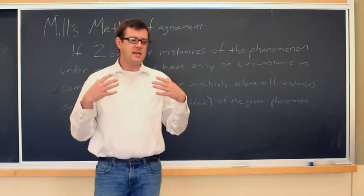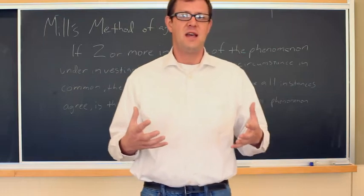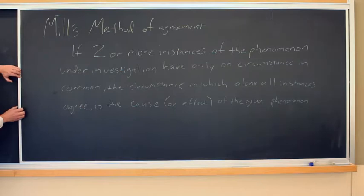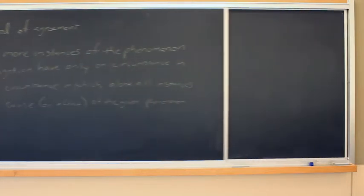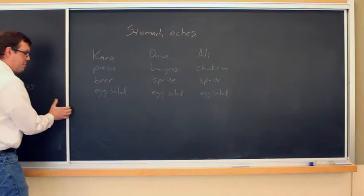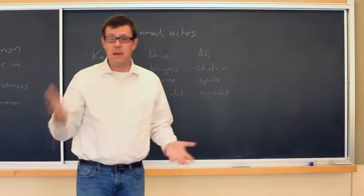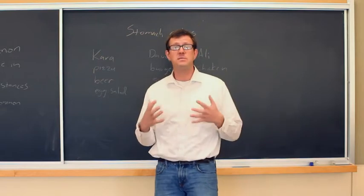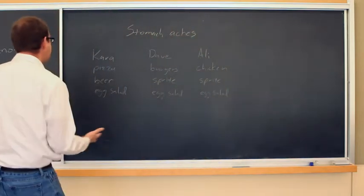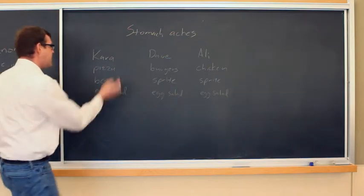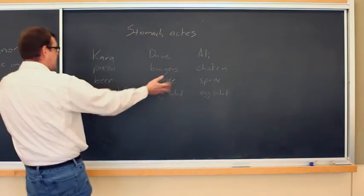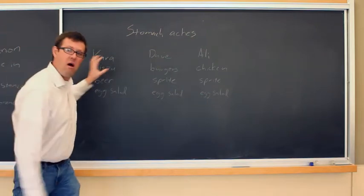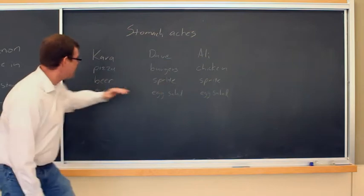This isn't exactly how psychologists think about things, because often times things don't line up as neatly as they do in Mill's early explanations regarding causality. We can imagine a picnic where we have three people who all have stomach aches and we need to explain why. We look at what they ate and notice they ate different things — Kara had burgers, Ali had chicken — but all of them had egg salad.